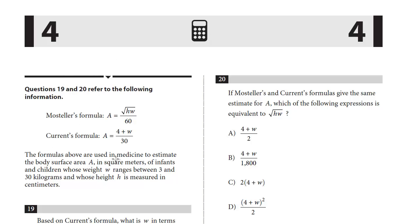The formulas above are used in medicine to estimate the body surface area A in square meters of infants and children whose weight W ranges between 3 and 30 kilograms and whose height h is measured in centimeters. So we have two different formulas. Let's take a look at the first question here.